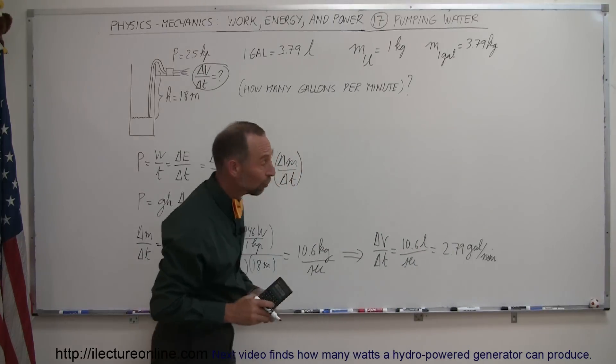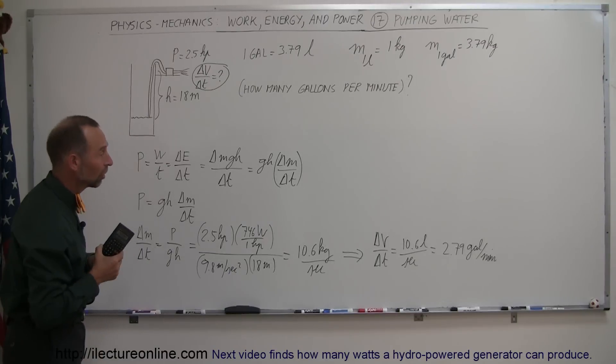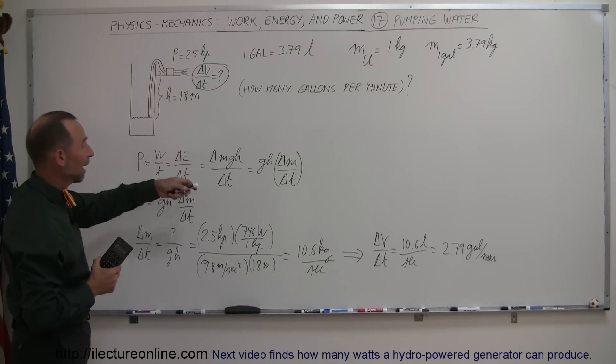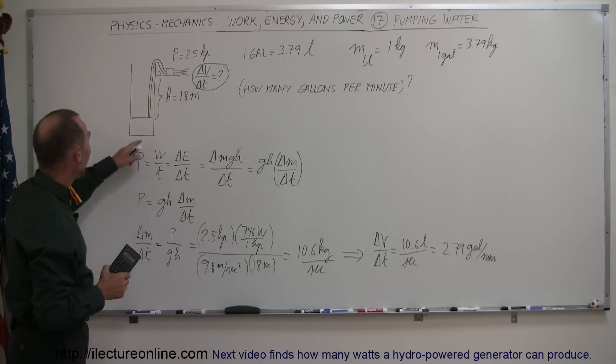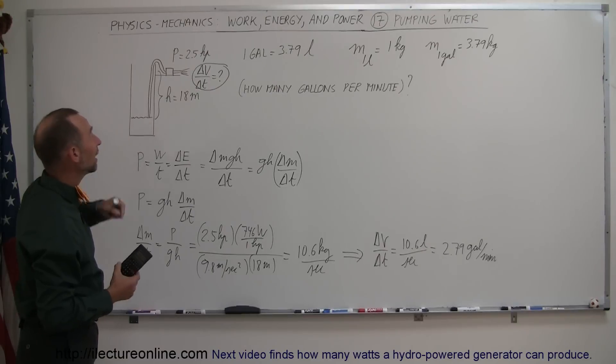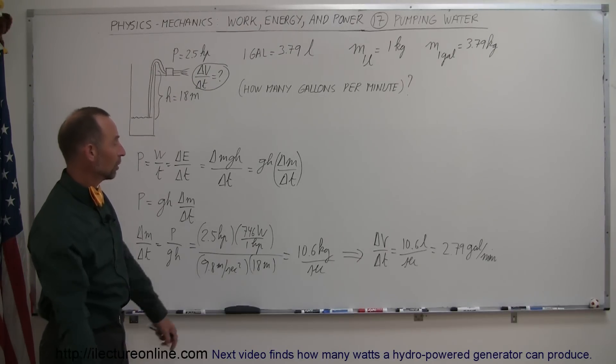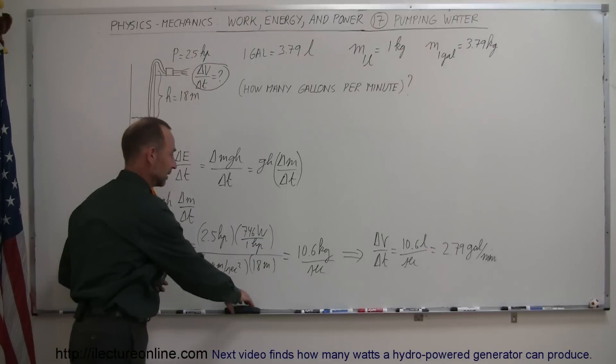Okay, so a 2.5 horsepower pump, which you can buy in most hardware stores, can pull about 2.8 gallons of water out of a well 18 meters deep, that's quite deep by the way, per minute. Oh, oh, oh, that was per second, wasn't it? Oh, I made a mistake.